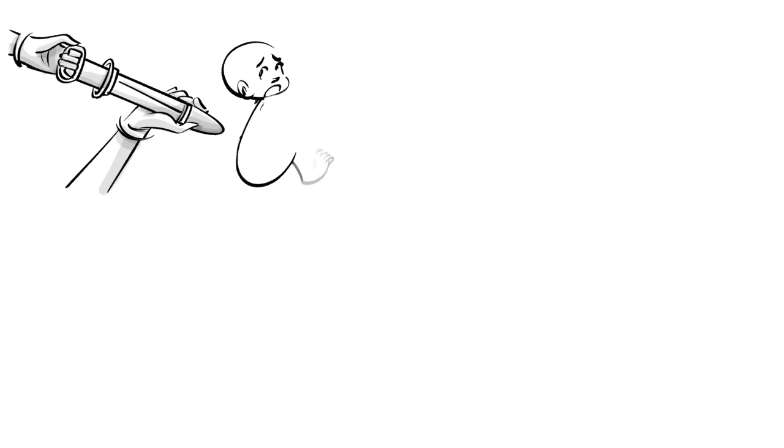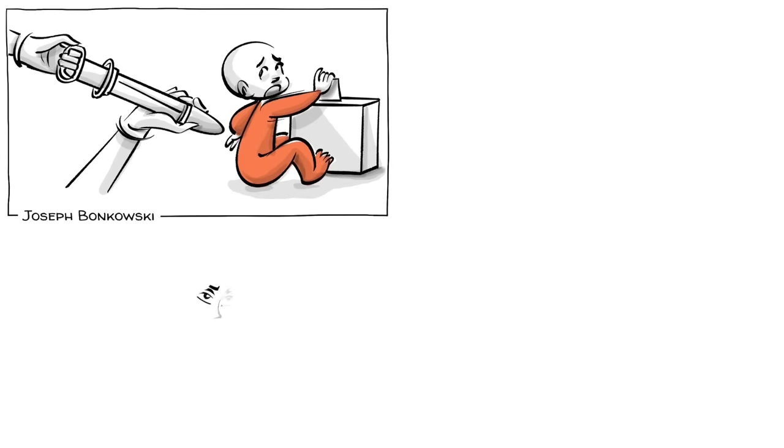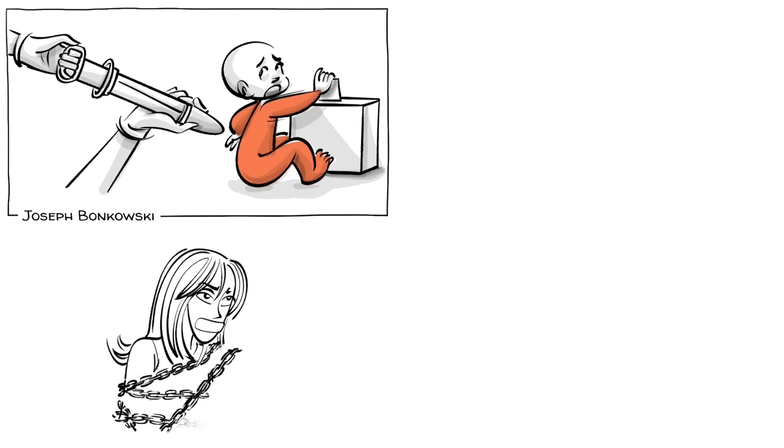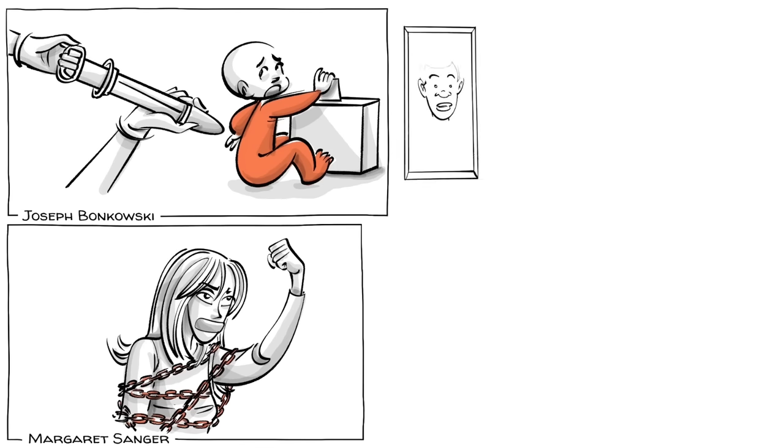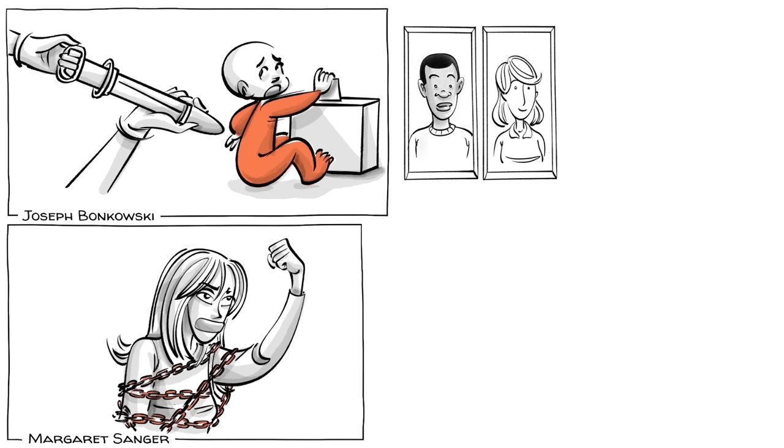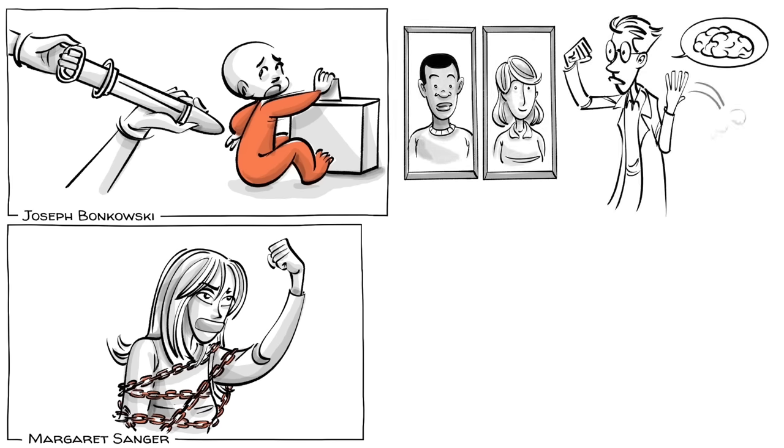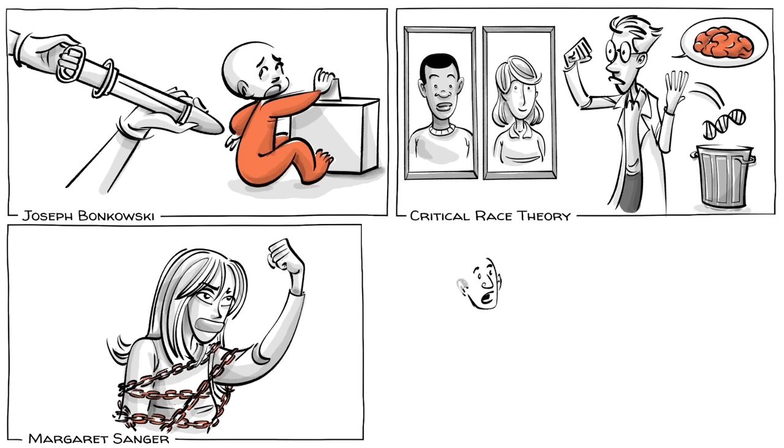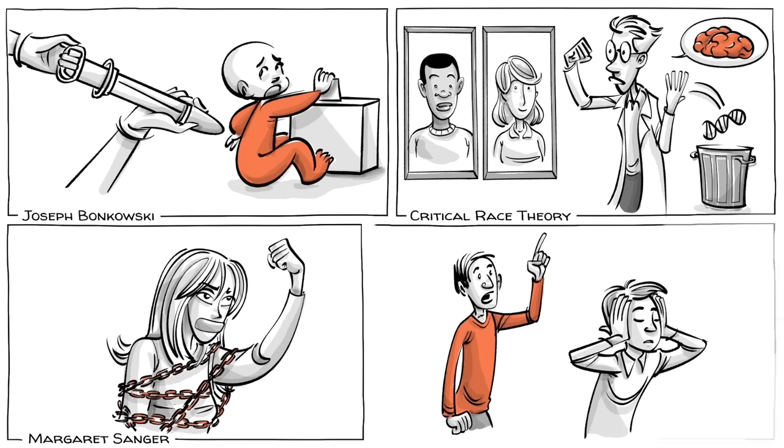Abortion is legal because babies can't vote. No woman can call herself free who does not control her own body. Race and skin color are socially constructed, not biologically natural. If liberty means anything at all, it means the right to tell people what they do not want to hear.